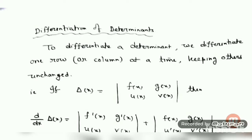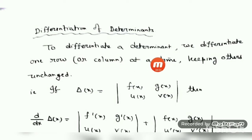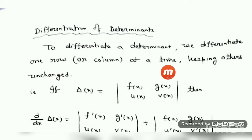Hello, students. In this video, we are going to do differentiation of determinants. You have a question in your textbook in the miscellaneous sector. Let me give you how to do the differentiation of a determinant. To differentiate a determinant, we differentiate one row or one column at a time, keeping the other unchanged.